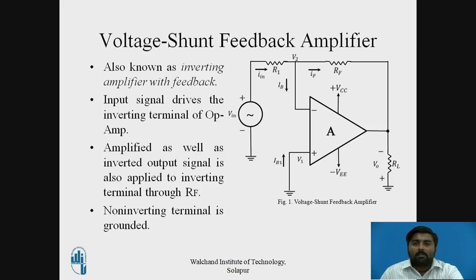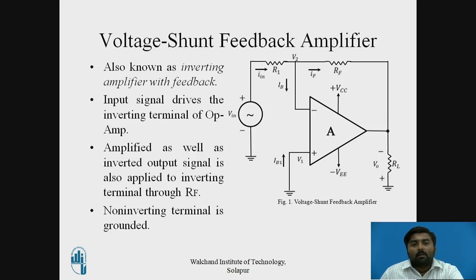Now let's see what is meant by the Voltage Shunt Feedback Amplifier. Figure 1 shows the Voltage Shunt Feedback Amplifier. You can see there is one op-amp denoted by A. It has a feedback connected to the non-inverting terminal, and the non-inverting terminal is connected to ground. So it is also known as an inverting amplifier with feedback. The input signal drives the inverting terminal of the op-amp, and the amplified and inverted output signal is applied back to the inverting terminal through RF.